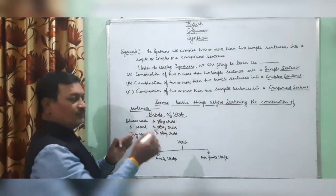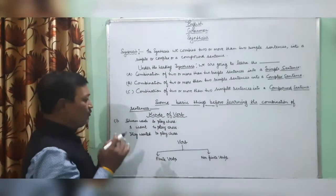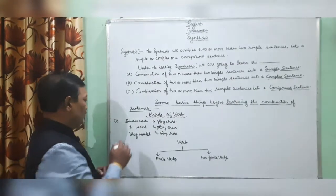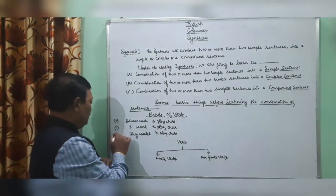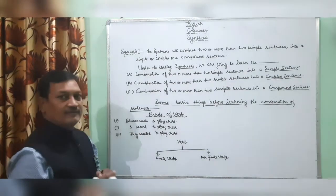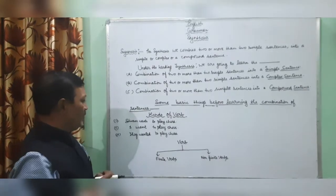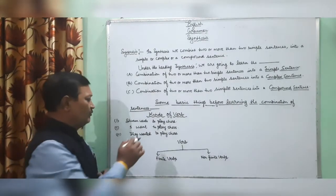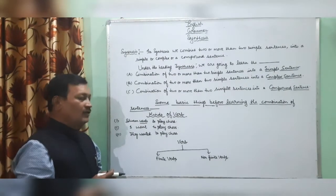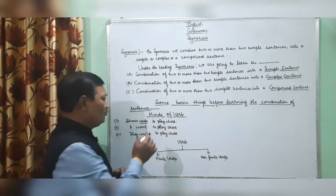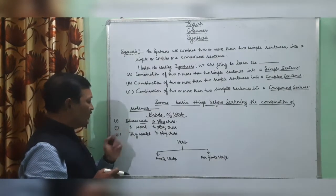Let us see with examples. Example number one: Sivam wants to play chess. Second example: I want to play chess. Third example: They wanted to play chess. You can see in the first example there is a verb 'wants', and in the same sentence there is another verb 'to play'.